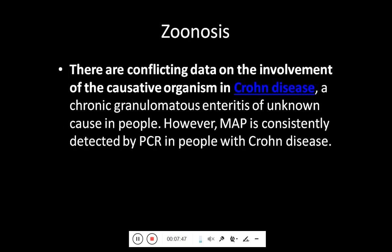Coming towards the zoonosis of this disease, there are conflicting data on the involvement of the causative organism in Crohn's disease — a chronic granulomatous enteritis of unknown cause in people. However, Mycobacterium avium paratuberculosis is consistently detected by PCR in people who have Crohn's disease.